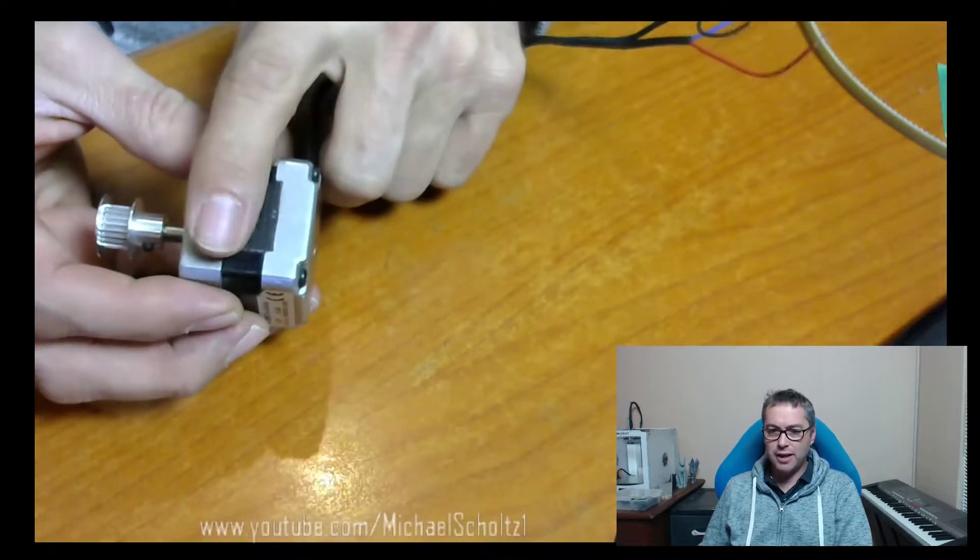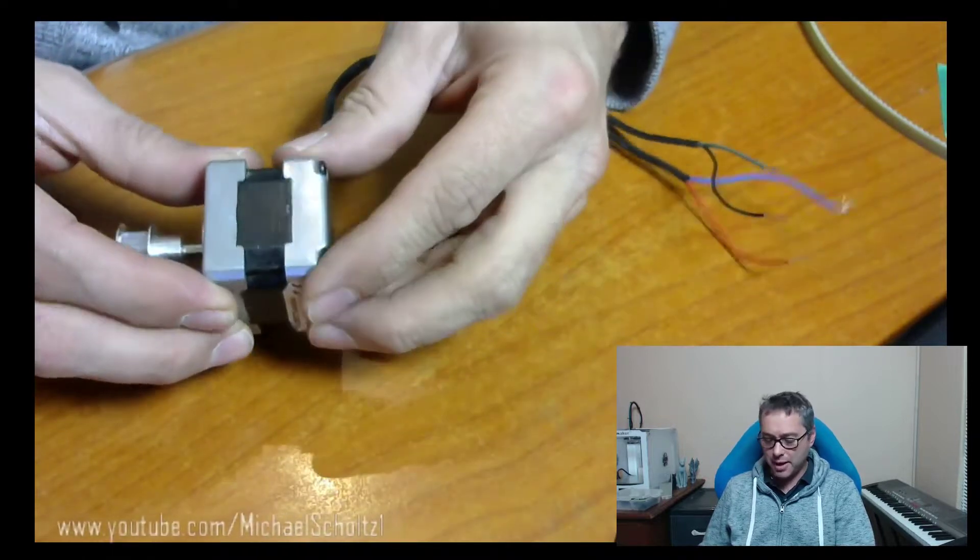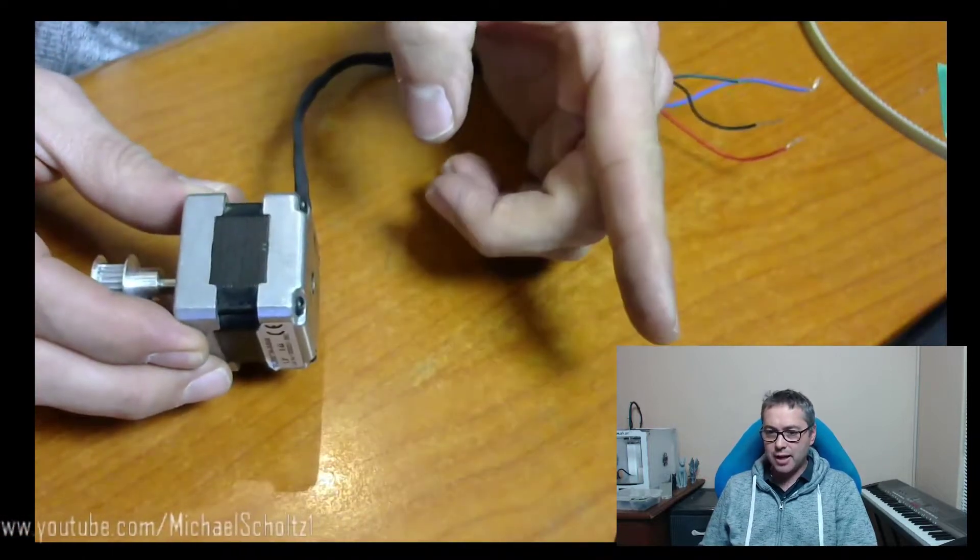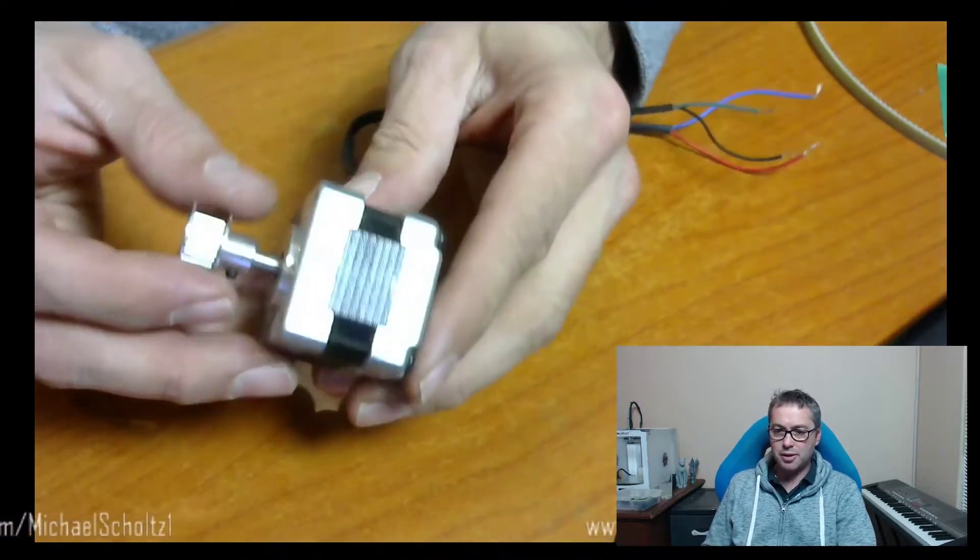Some of these motors are quite a bit longer than others. When they're really flat, they're called pancake steppers because they're flat as a pancake. The extra length relates to the amount of torque this motor has and the power that this motor has.